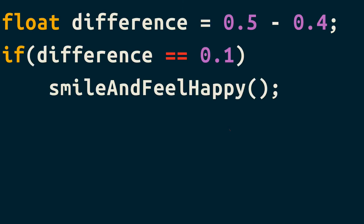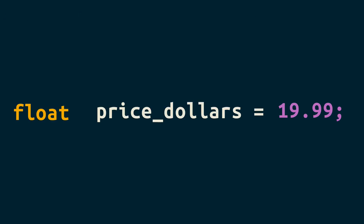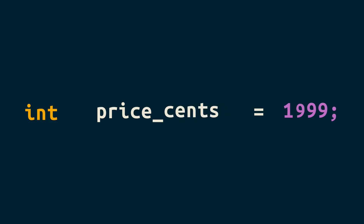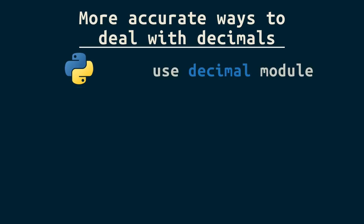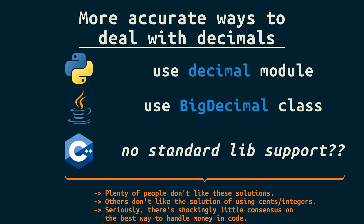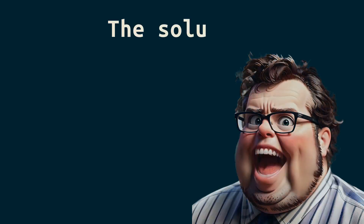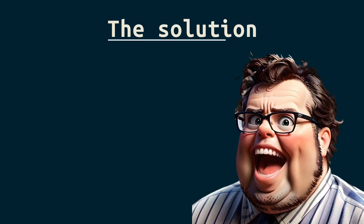Some people suggest never comparing for equality with floating point numbers. One solution, if dealing with money, is to use all integers. There are also other floating point types designed to be more accurate with decimal numbers. However, many people say there is no good solution — I disagree. I think you already have the solution from watching this video.